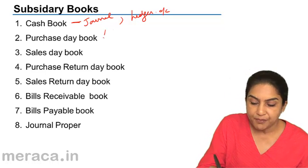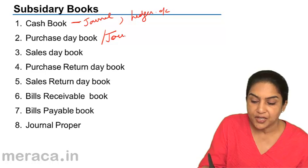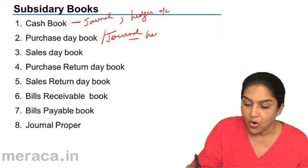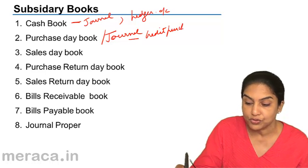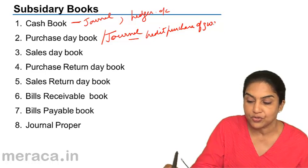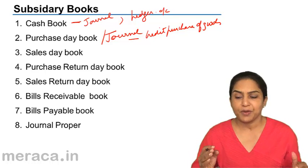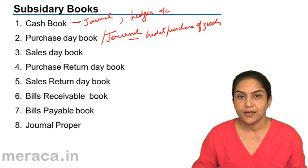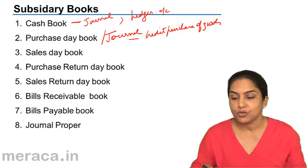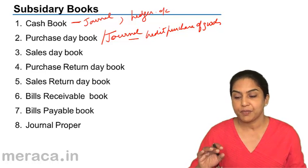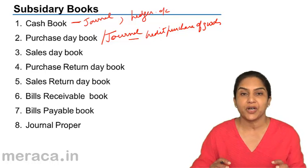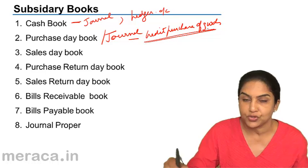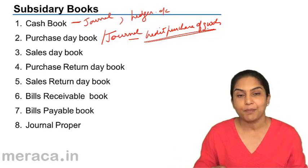What is a purchase day book, also called a purchase journal? It is a book in which we record all credit purchases of goods. Goods are those which we purchase in order to sell. So if I am a clock dealer, the clothes I buy in order to sell would be my goods and would be put in the purchase account. But if I buy furniture, it goes to a furniture account — it is not goods. So credit purchase of goods is recorded in the purchase day book.